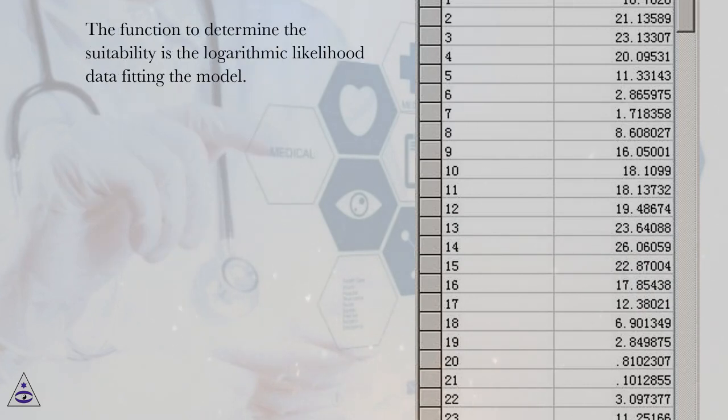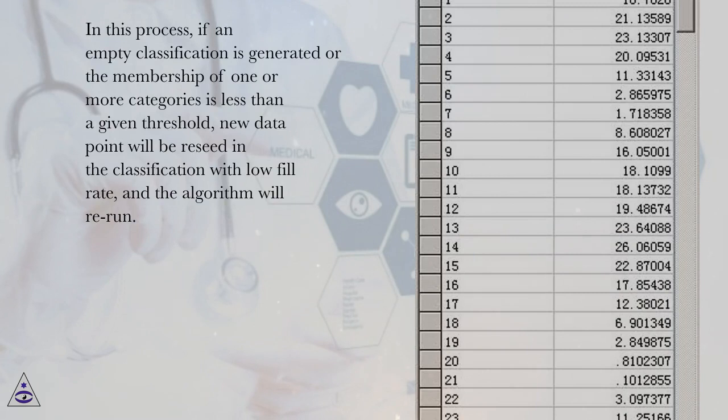The function to determine the suitability is the logarithmic likelihood data fitting the model. In this process, if an empty classification is generated or the membership of one or more categories is less than a given threshold, new data point will be received in the classification with low fill rate, and the algorithm will rerun.